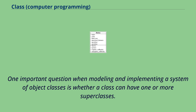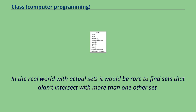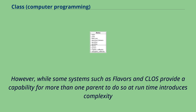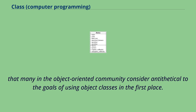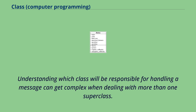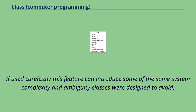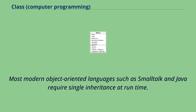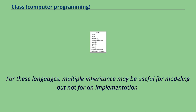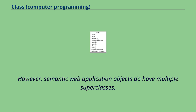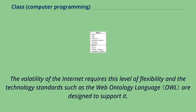One important question when modeling a system of object classes is whether a class can have one or more superclasses. While some systems such as Flavors and CLOS provide a capability for more than one parent, doing so at runtime introduces complexity that many in the object-oriented community consider antithetical to the goals of using object classes. Understanding which class will be responsible for handling a message can get complex when dealing with more than one superclass, and if used carelessly, this feature can introduce system complexity and ambiguity that classes were designed to avoid. Most modern object-oriented languages such as Smalltalk and Java require single inheritance at runtime.